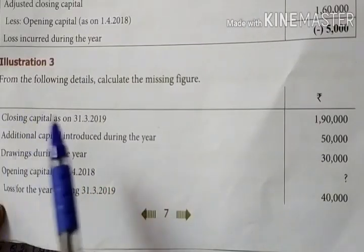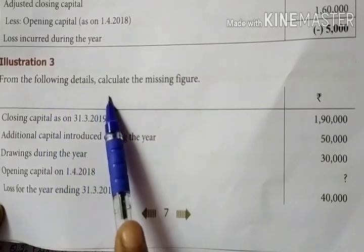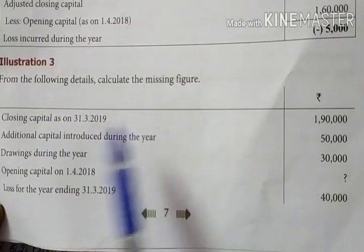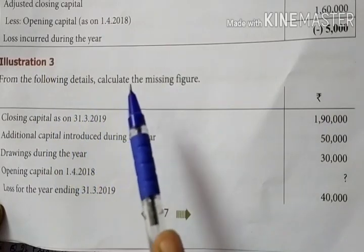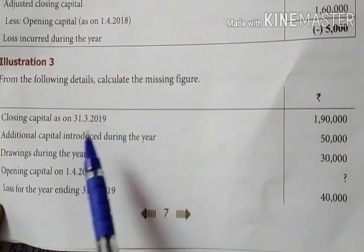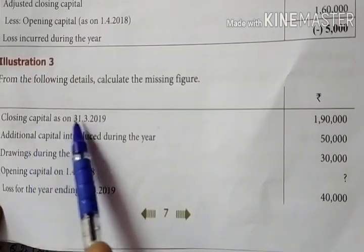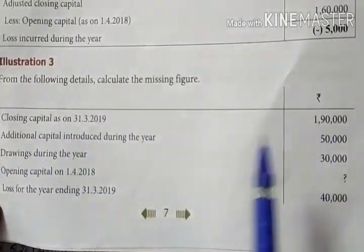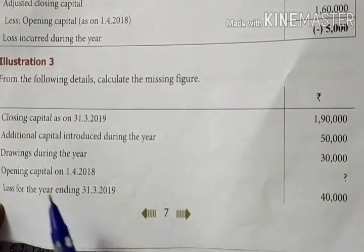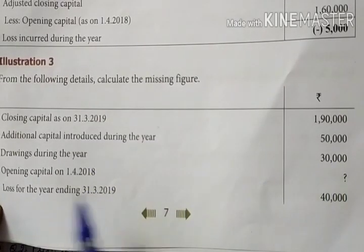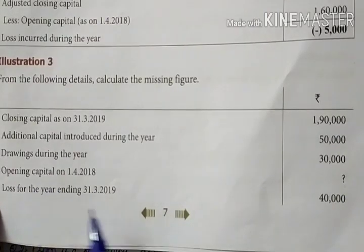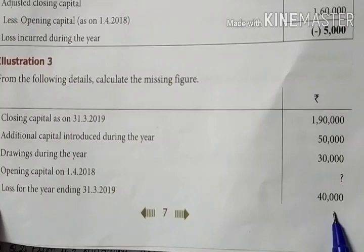Next sum: from the following details, calculate the missing figure and find out the profit or loss. Listen carefully. Closing capital: 1,09,000. Additional capital introduced: 50,000. Drawings: 30,000. Opening capital: question mark. Loss for the year: 40,000.